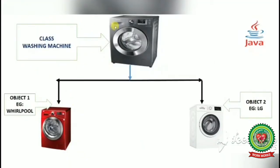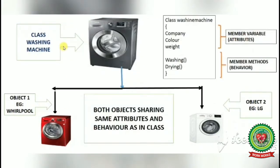See the example students. We have created a class called washing machine. Now we have created two objects of the same class: object 1 and object 2. Object 1 is named Whirlpool washing machine and object 2 is named LG washing machine.